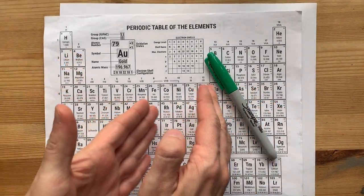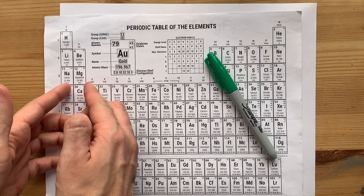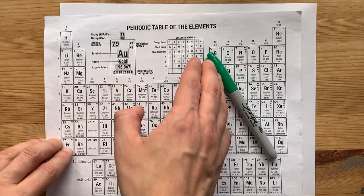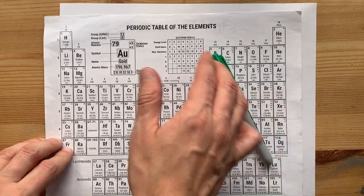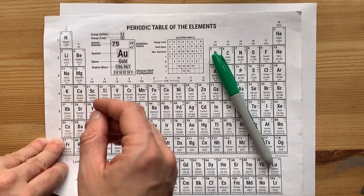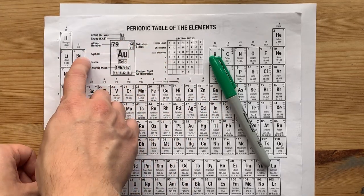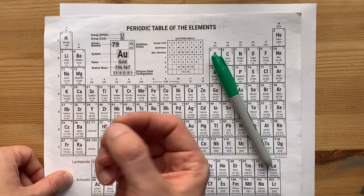Magnesium is a metal. I know that because it's on the left side of the periodic table, specifically left of this staircase. Hydrogen is an exception to that rule, but magnesium is definitely one of the alkaline earth metals.